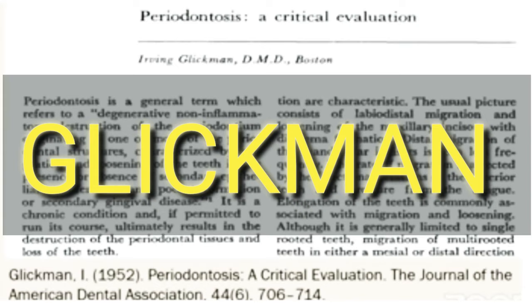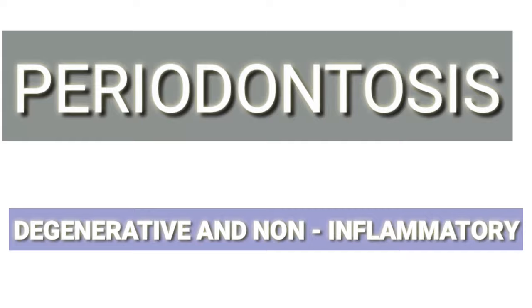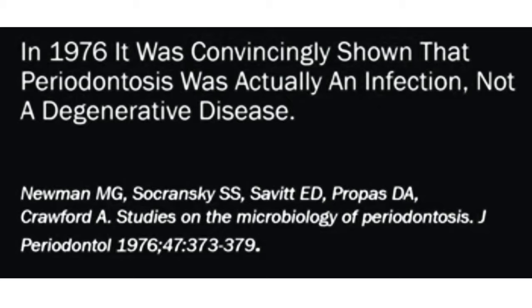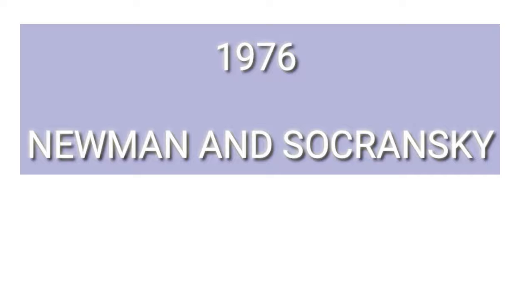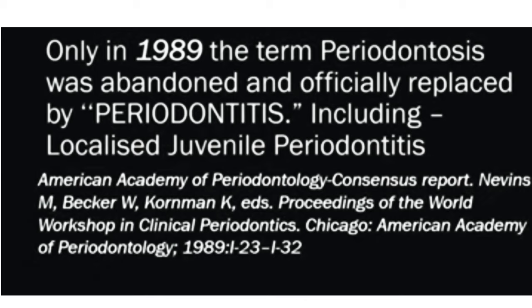In 1952, Glickman proposed 'periodontosis' — a degenerative and non-inflammatory destruction of the periodontium. In 1976, it was convincingly shown by Newman and Socransky, in their studies on the microbiology of periodontosis, that periodontosis was actually an infection and not a degenerative disease. Finally, in 1989, the term 'periodontosis' was abandoned and officially replaced by what we now call 'periodontitis.'